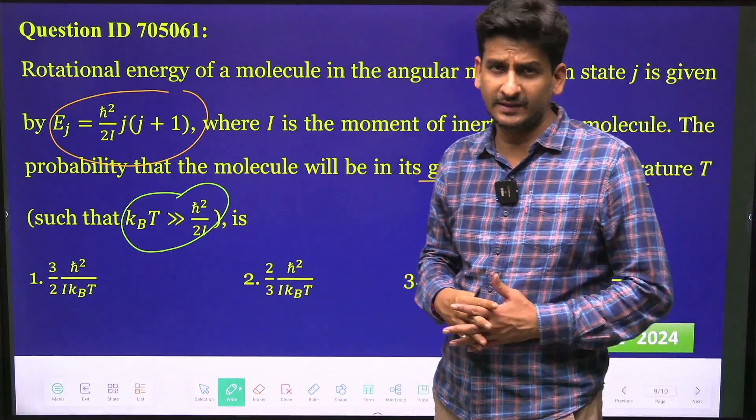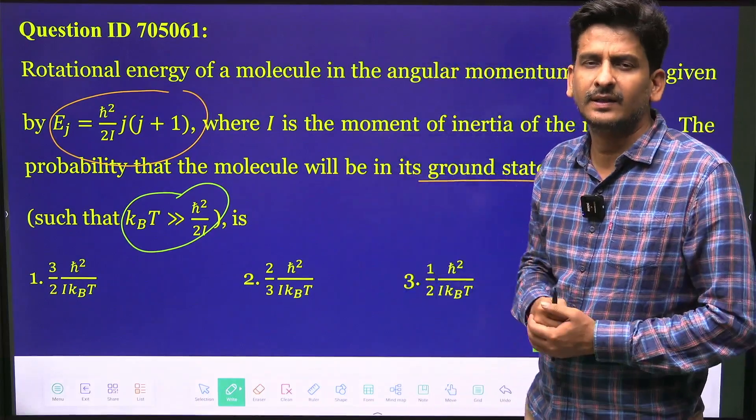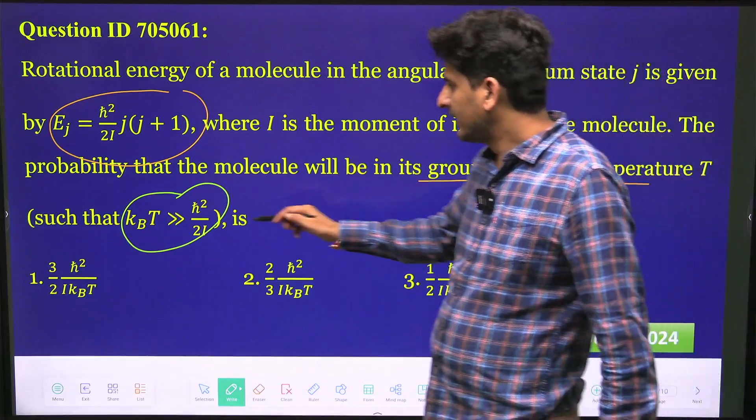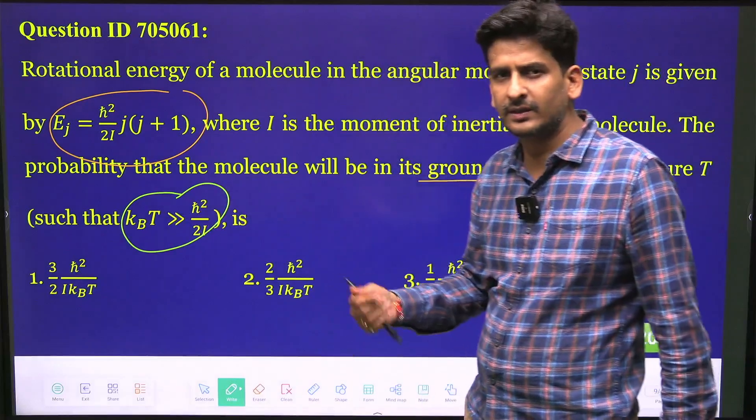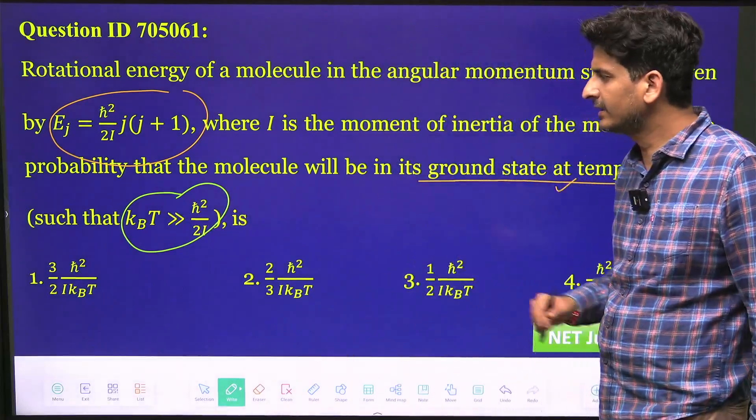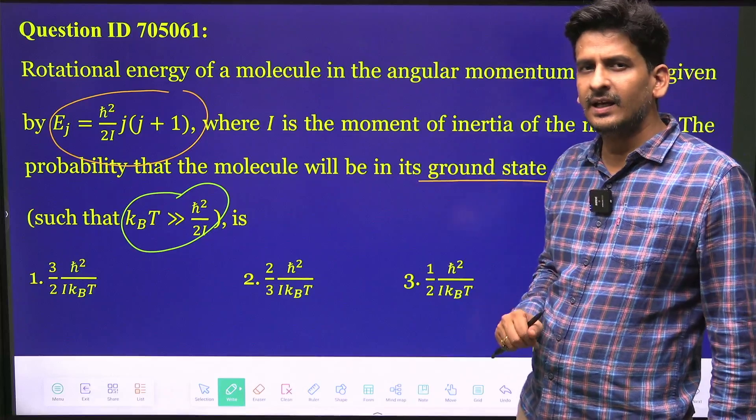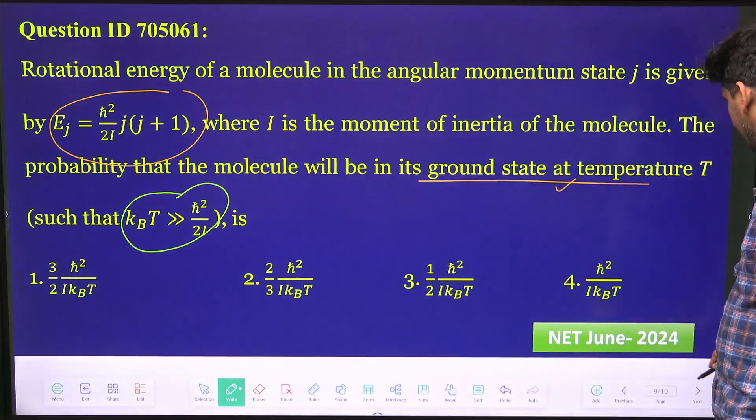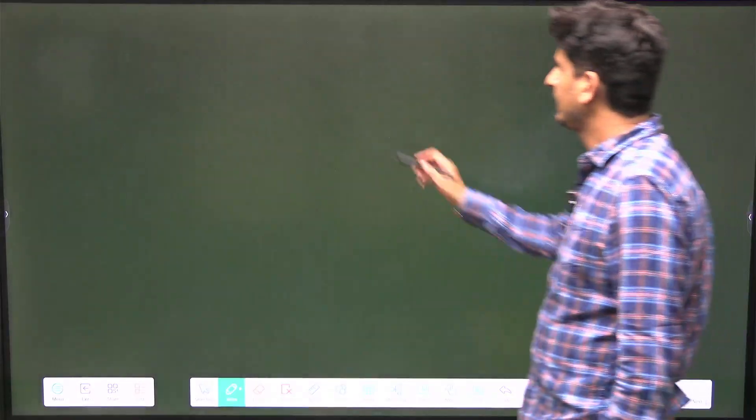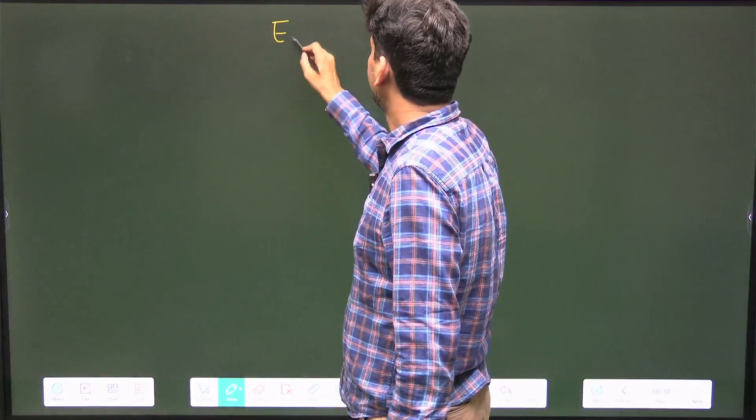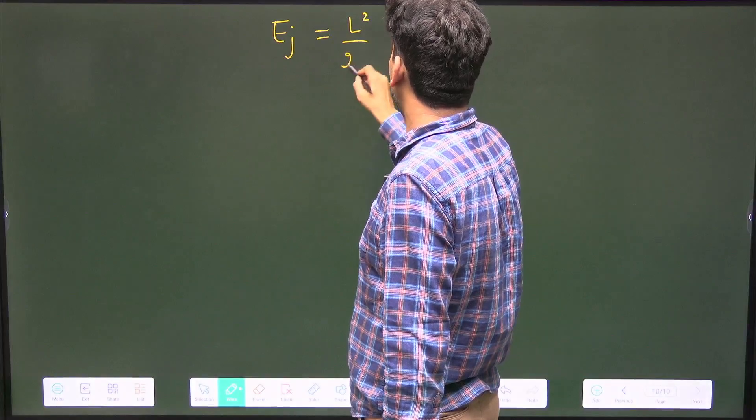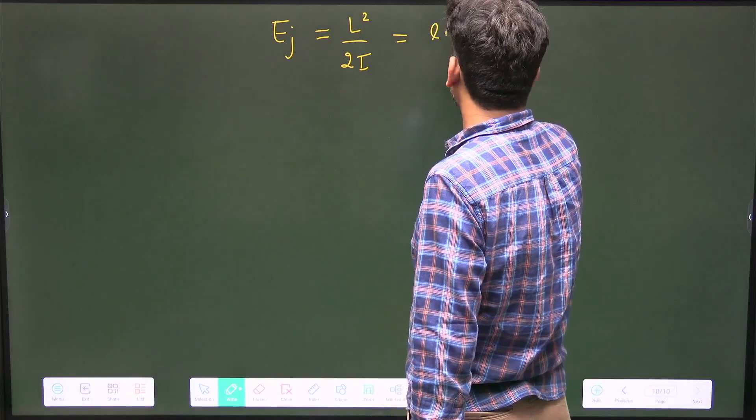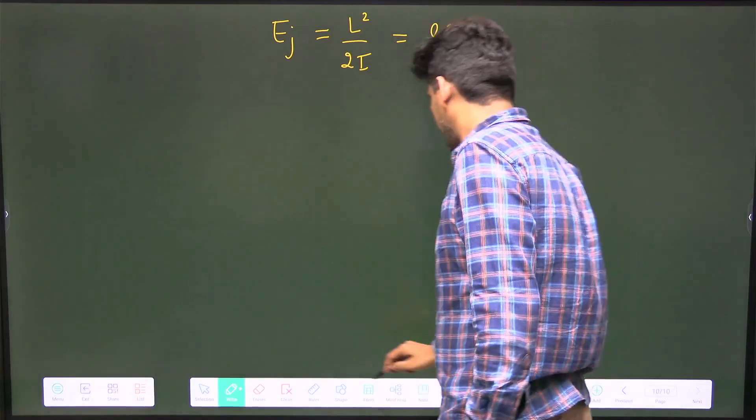that the molecule is in the ground state. For that, the first step is to write the partition function. But the temperature is high, so the thermal energy is much greater than the rotational energy, allowing us to work in the classical space. Let me write this energy as Ej = L²/(2I), and since L is quantized, it becomes j(j+1)ℏ²/(2I).